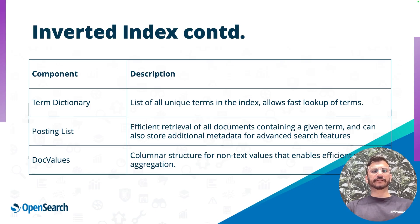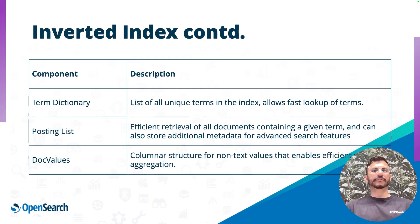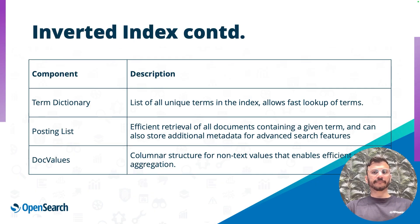To summarize, an inverted index has a terms dictionary — a dictionary with all the unique terms in the index data. Then the posting list, which is the information about each term, in which document they exist, and where in the document. Think of it like this: the terms dictionary is about what words are searchable, and the posting list is about where to find each of those words. We also have doc values — a different type of data structure that complements the inverted index. It's a columnar data structure designed for running sort queries and aggregation queries, not directly related to relevancy, but important for later topics.